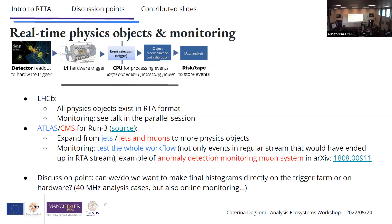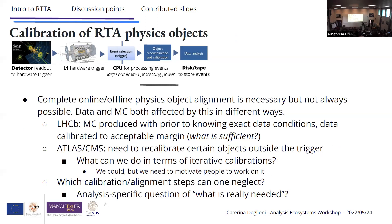There's also an interesting example of anomaly detection monitoring in the new CMS system for run three. Related to that: can we or do we want to make final histograms? If you're concerned about event size, why not skip the event completely and just take the histogram? There are 40 MHz analysis cases for HL-LHC, and online monitoring could also be interesting for more complex triggers. In terms of calibration of real-time analysis physics objects, complete online and offline alignment would be ideal but isn't always possible.